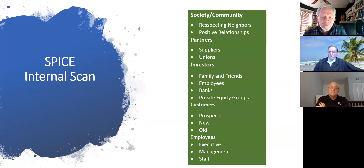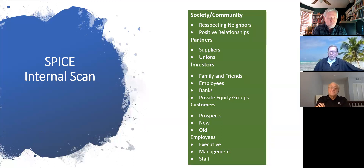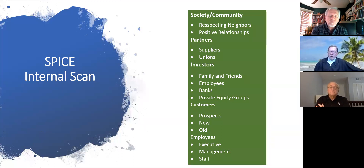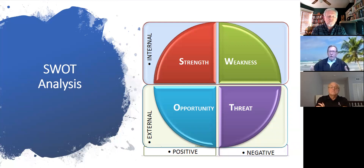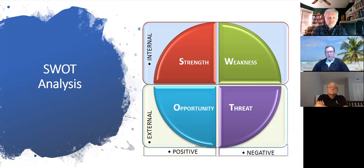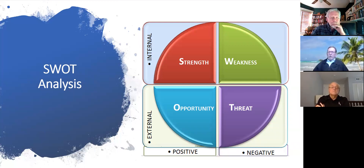All these different stakeholders have to be considered as part of the strategic plan. Now we're going to actually look at a SWOT. Given what we just talked about with PESTLE or SPICE, what do we do as we move forward? We'll go through strengths, weaknesses, opportunities, and threats. On the left side you have positives, on the right negatives. On the top you have internals, on the bottom externals. This helps us better understand how the tool is used.